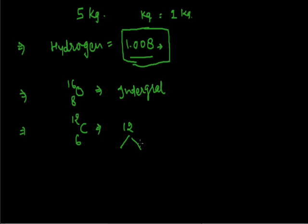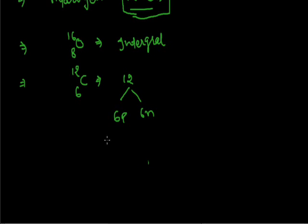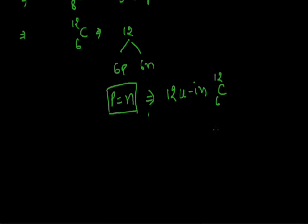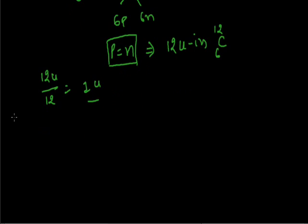We know that in one atom of carbon there are 6 protons and 6 neutrons, and the mass of a proton and a neutron are approximately equal. So we can say there are 12 units in one atom of carbon. Dividing these 12 units by 12 gives 1 unit — which may be a proton or neutron. Thus atomic mass expresses how many times an atom of a substance is heavier than one-twelfth of the mass of a carbon-12 atom.